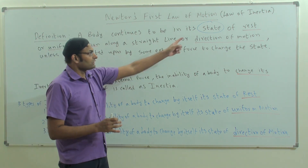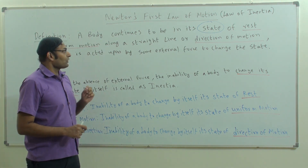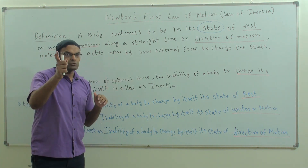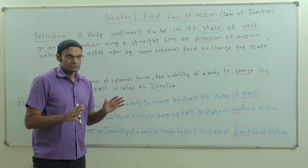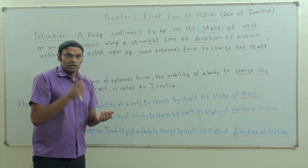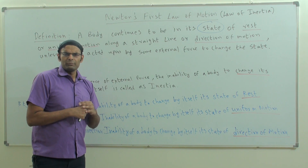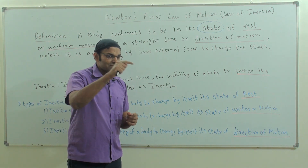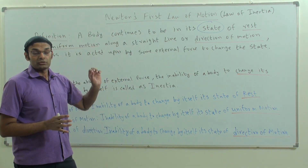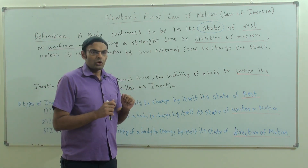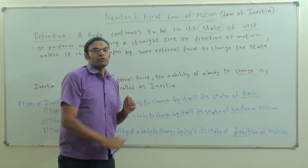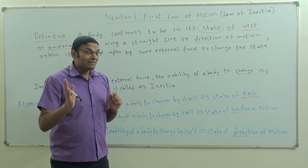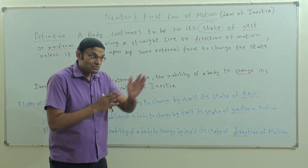Let's take another example for uniform motion along a straight line. I have a frictionless floor — I am using a frictionless floor for a particular reason. A ball is rolled on the frictionless floor at a velocity of 10 meters per second. The ball continues to move at 10 meters per second unless it is acted on by an external force, meaning it moves in a straight line.